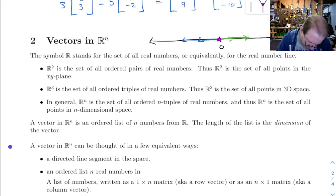So let's look at this next part here. A vector in R^n is an ordered list of n numbers from R, and the length of the list is the dimension of the vector.